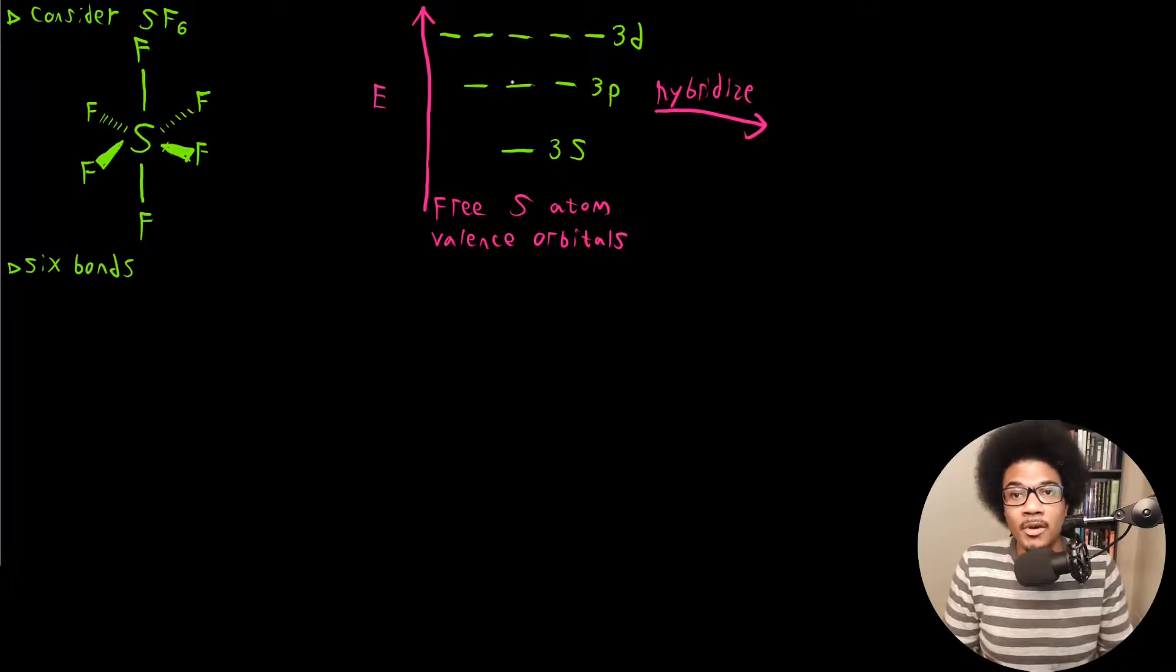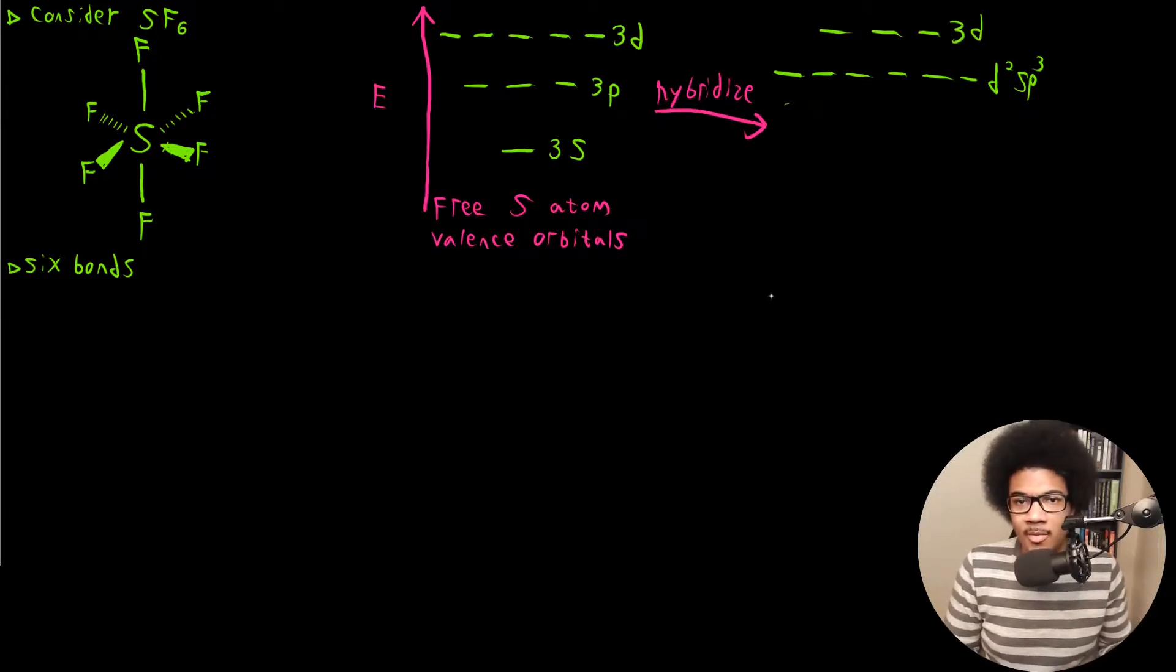It's going to be one bond short. So what's going to happen is two D orbitals are going to get involved to form six hybrid orbitals. So this is D2SP3 hybridization, and that's going to leave behind three unhybridized 3D orbitals.